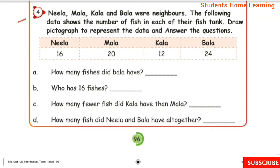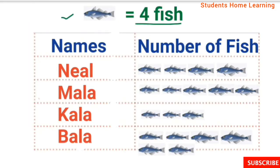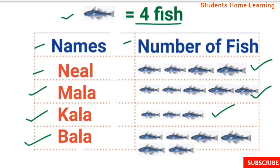Fourth problem: Neela, Mala, Kala and Bala are neighbours. The following data shows the number of fish in each of their fish tanks. Draw a pictograph to represent the data. One picture = 4 fish. Neela: 16 fish — 4 pictures. Mala: 20 fish — 5 pictures. Kala: 12 fish — 3 pictures. Bala: 24 fish — 6 pictures.